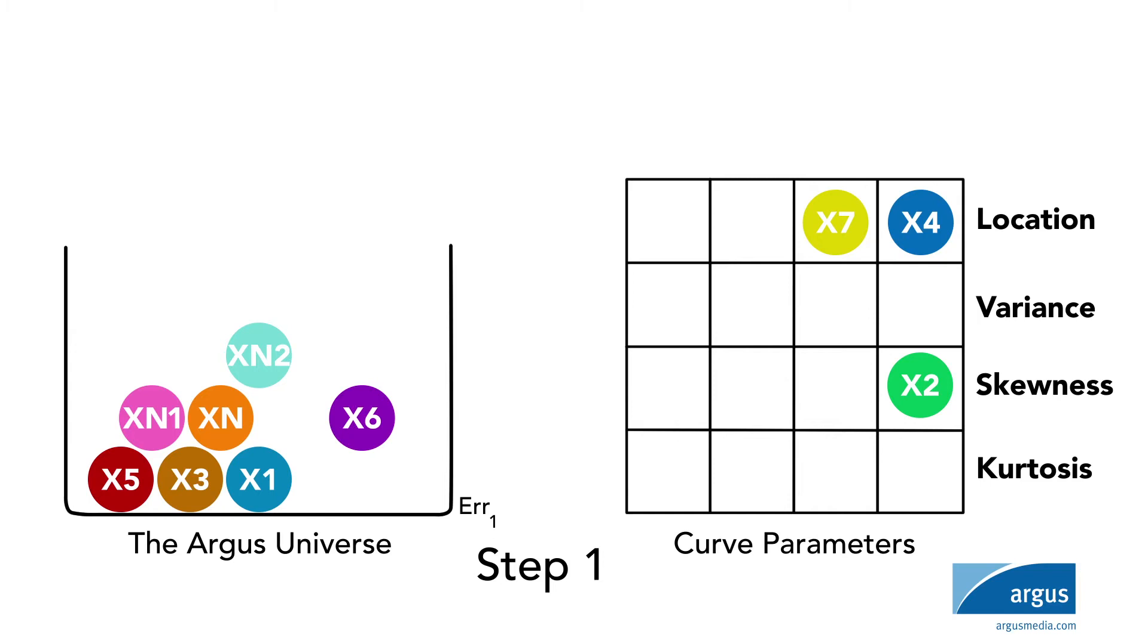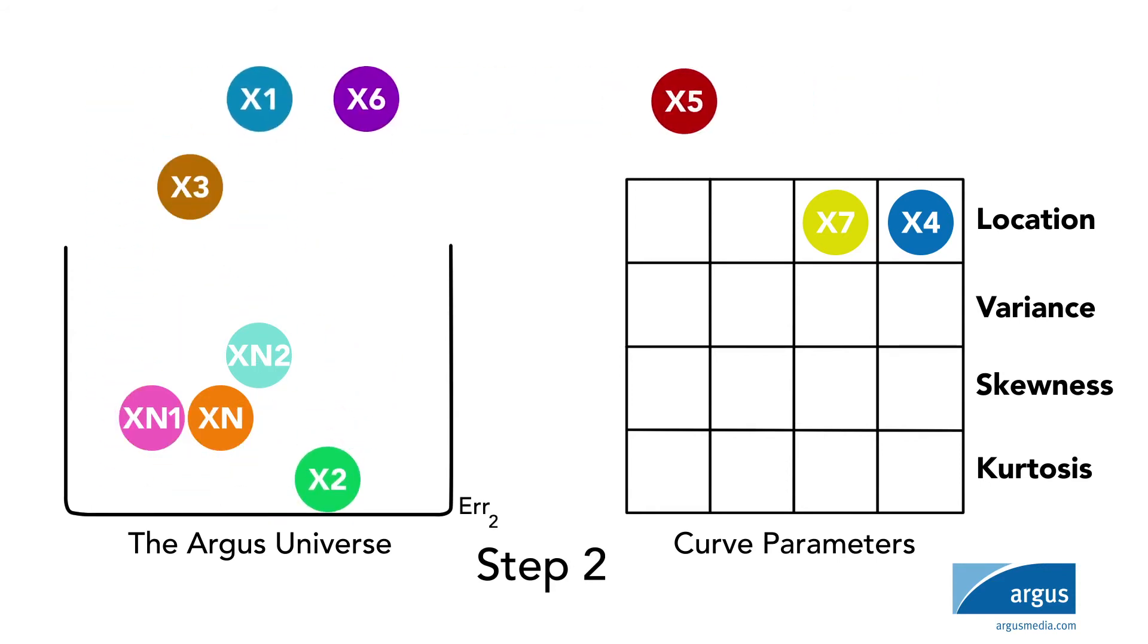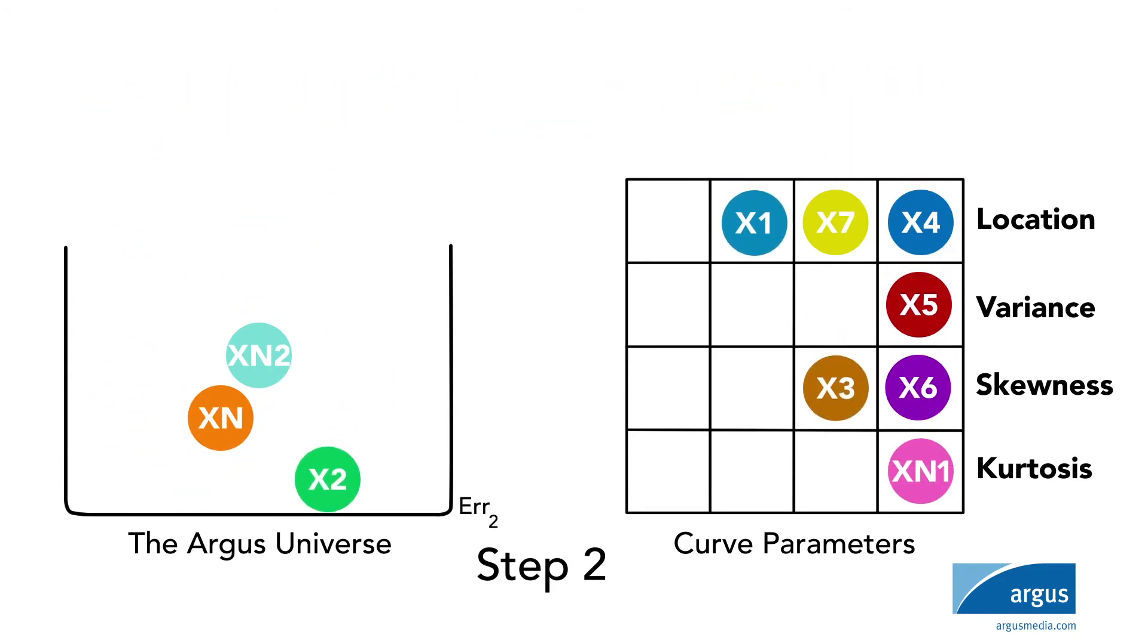The algorithm doesn't just consider adding drivers, it also considers removing them from a parameter. As you can see in this example, the X2 driver was added to the skewness parameter in step one, but was removed into the Argus Universe in step two.